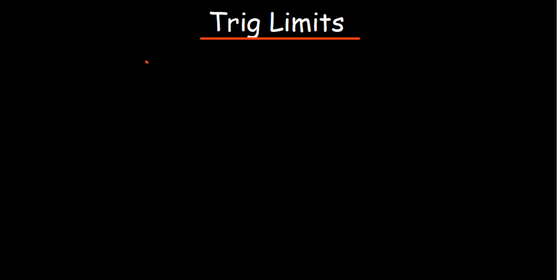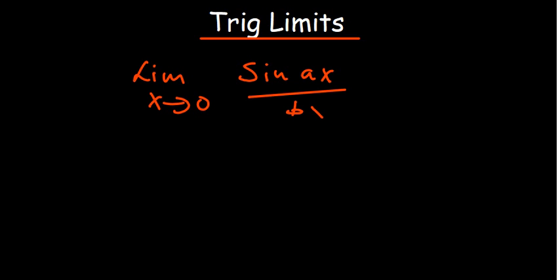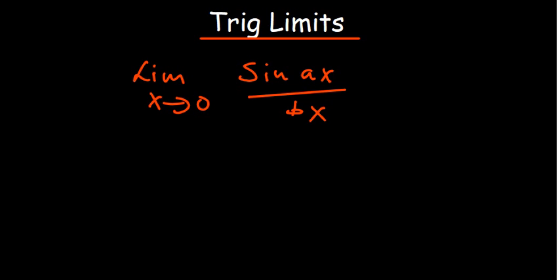With that understanding, let's look at some examples to solidify our knowledge. Consider the limit as X approaches zero of sine aX over bX. The basic idea is we want what is attached to the sine function to match the denominator. Currently they don't match, so we need to manipulate the denominator. Our goal is to make the argument of sine equal to the denominator expression.